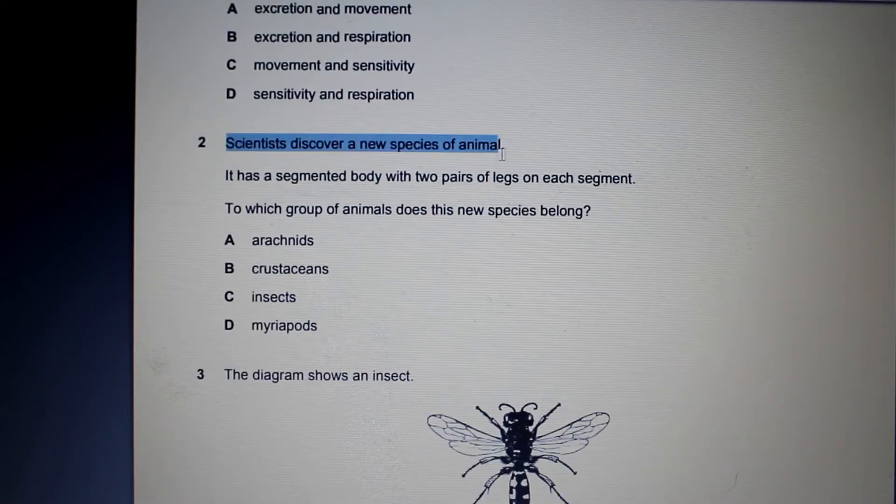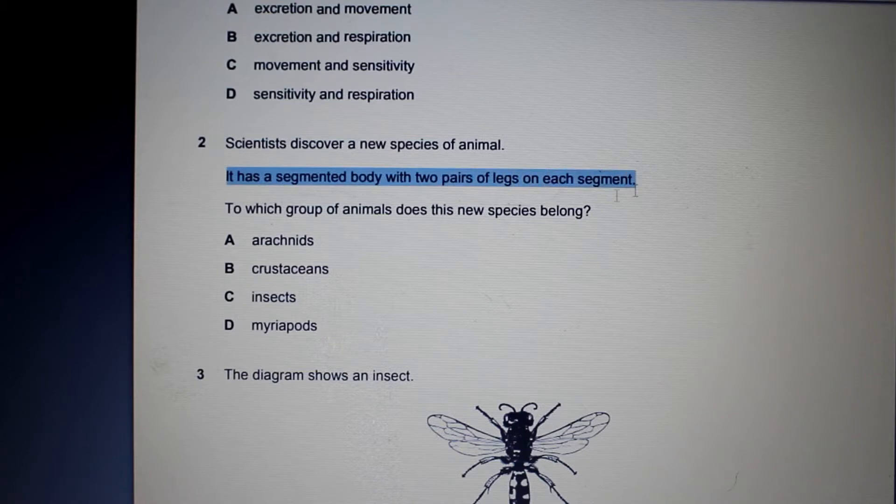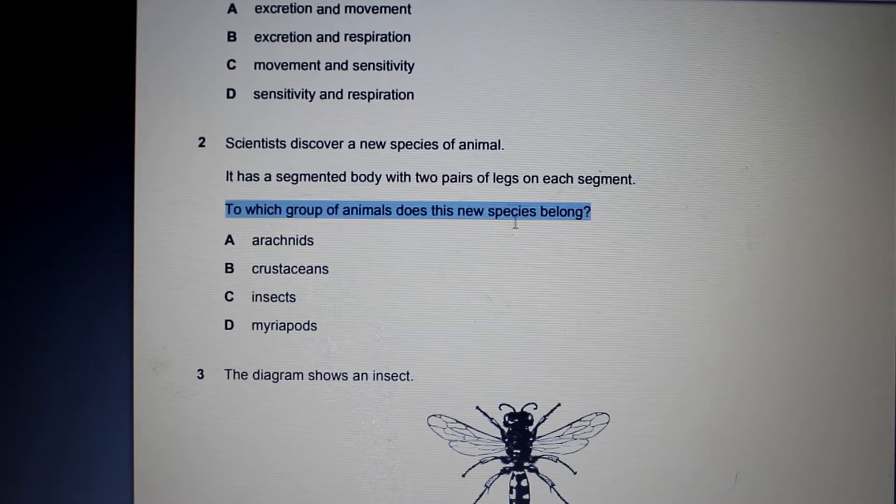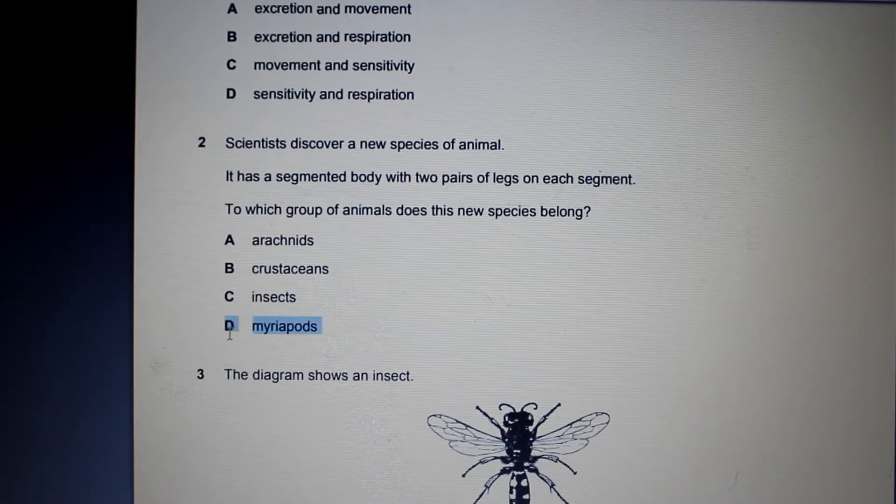So scientists discover a new species of animal. It has a segmented body with two pairs of legs on each segment. To which group of animals does this new species belong? Well this is another classic example of why you have to know the characteristics of all the different classes. So an animal with two pairs of legs on each segment. The clue here is segment. If you remember myriapods have segmented bodies with a pair of legs on each segment. So the answer would be D.